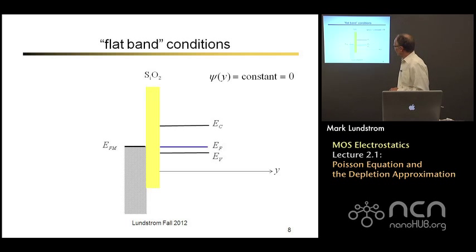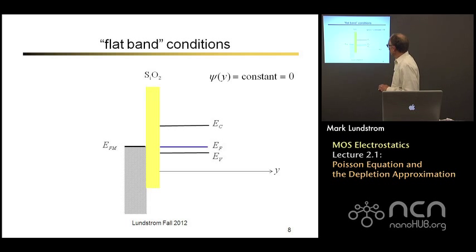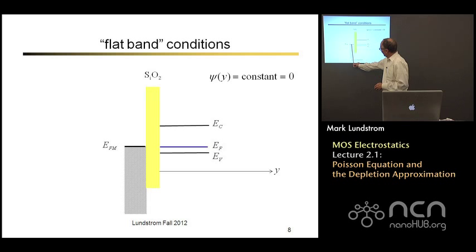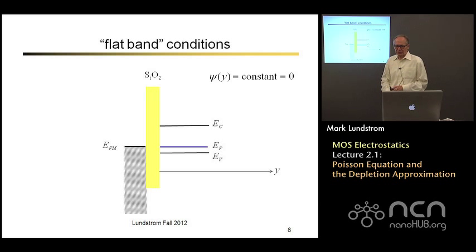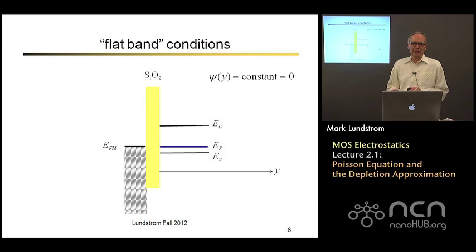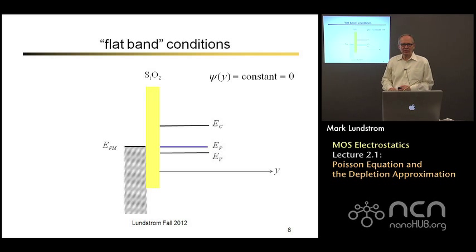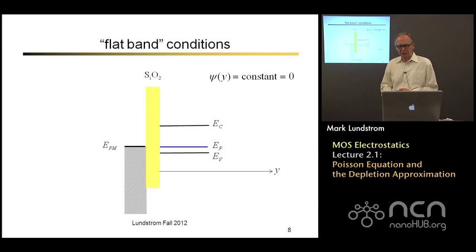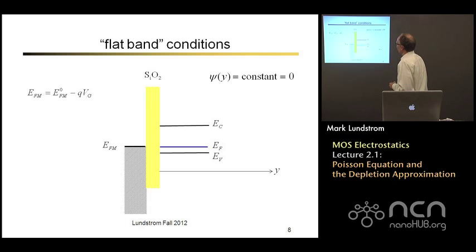Let's look at the energy band diagram under what people call flat band conditions. If we put a metal gate on a P-type semiconductor and insert a thin SiO2 layer — if we just happened to find the right metal that had the right work function such that its Fermi level lined up with the Fermi level in the semiconductor, then no charge would transfer. There would be no electrostatic potential setup. All of the bands would be flat. This is what we call flat band conditions.